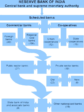Around the turn of the twentieth century, the Indian economy was passing through a relative period of stability. Around five decades had elapsed since the Indian Rebellion, and the social, industrial and other infrastructure had improved. Indians had established small banks, most of which served particular ethnic and religious communities. The presidency banks dominated banking in India but there were also some exchange banks and a number of Indian joint stock banks. All these banks operated in different segments of the economy. The exchange banks, mostly owned by Europeans, concentrated on financing foreign trade. Indian joint stock banks were generally under-capitalised and lacked the experience and maturity to compete with the presidency and exchange banks. This segmentation led Lord Curzon to observe: 'In respect of banking it seems we are behind the times. We are like some old-fashioned sailing ship, divided by solid wooden bulkheads into separate and cumbersome compartments.'